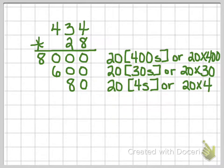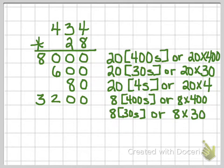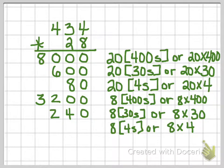And now we are going to scoot on over to the 8. We are going to do 8 four hundreds, or 8 times 400, and that's going to give us 3,200. We are going to have 8 thirties, or 8 times 30, which is going to give us 240. And then we have 8 fours, or 8 times 4, which is going to give us 32.